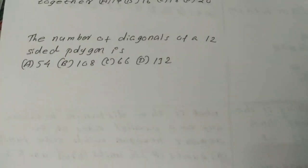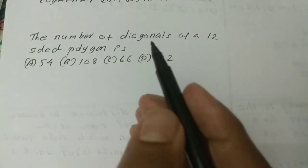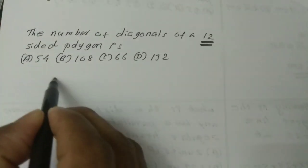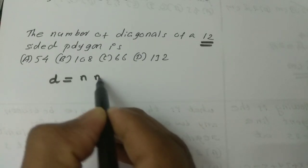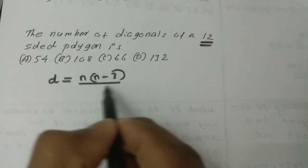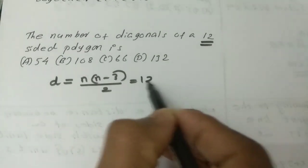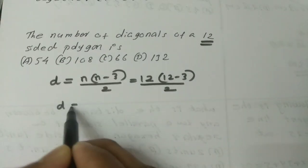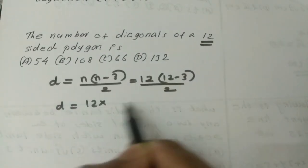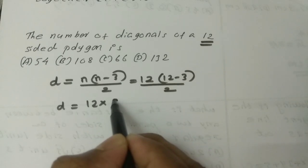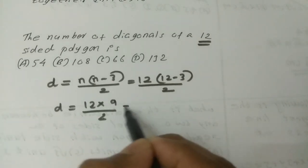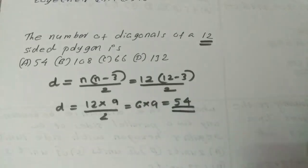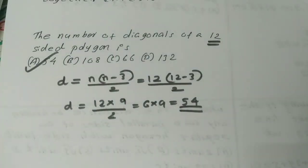Next question: the number of diagonals of a 12-sided polygon. Using the formula n(n-3)/2, we get 12(12-3)/2 = 12 × 9 / 2 = 54. So the answer is 54.